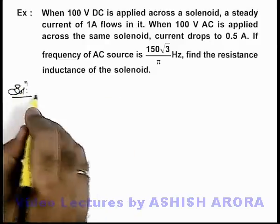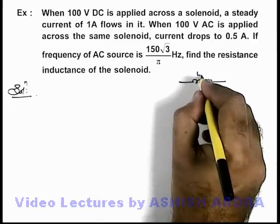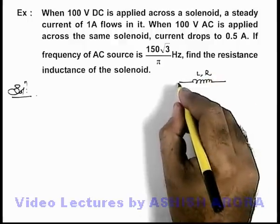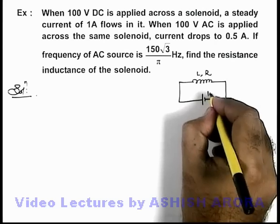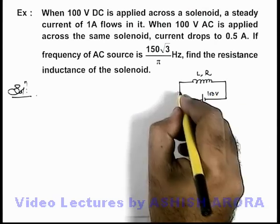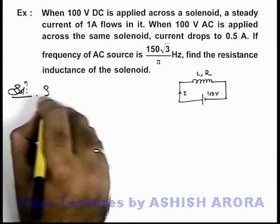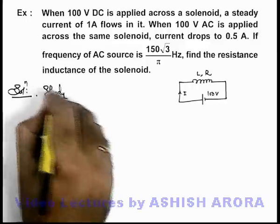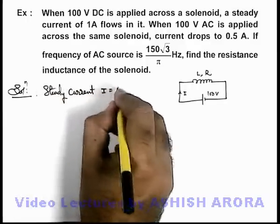Now in this situation we can directly write, if we are given with an inductor coil with inductance L and resistance R, and a DC voltage of 100 volt is connected, the current which will flow through it in steady state we can directly write.